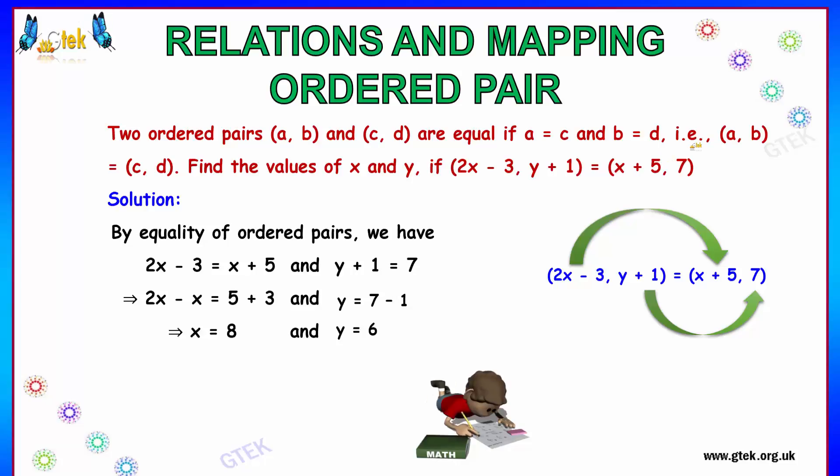So the condition is (a, b) and (c, d) are equal. This is the condition given and you need to find x and y for this equation. So this is considered as a and this is considered as b, and this is c and this one is d. So the condition is a is equal to c: 2x minus 3 is equal to x plus 5.